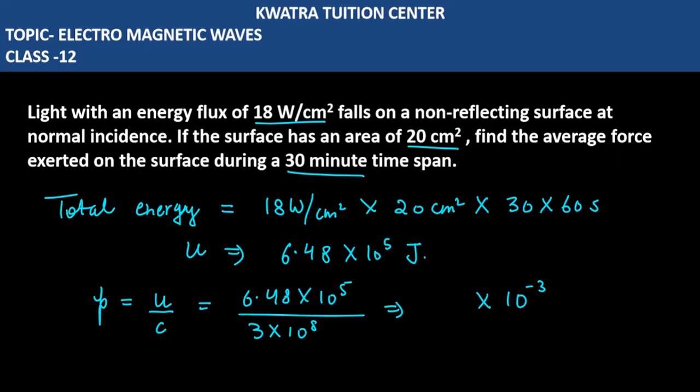Then you have 6.48 divided by 3, which will give you 2.16 as the answer. This is in kg meter per second. So this is your answer for momentum.